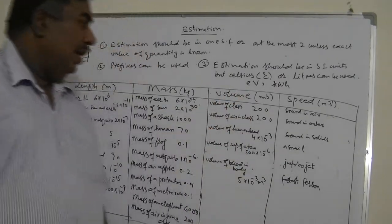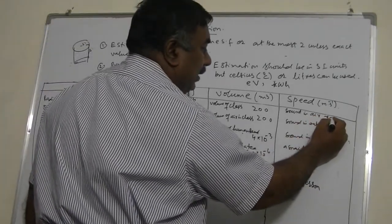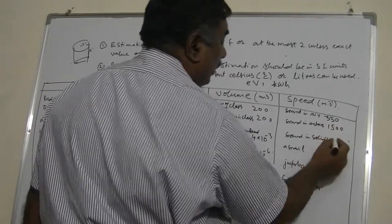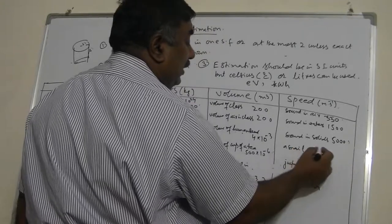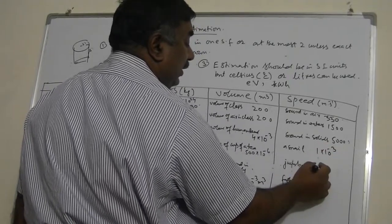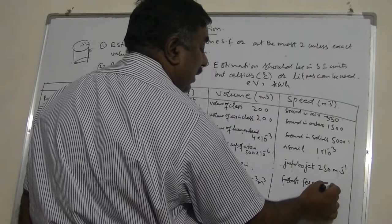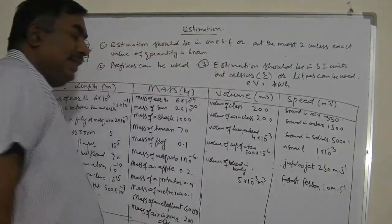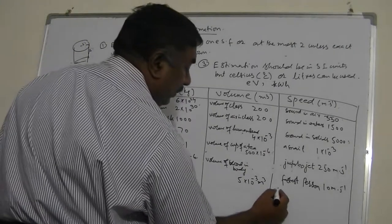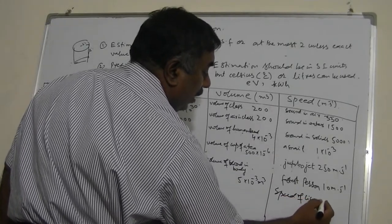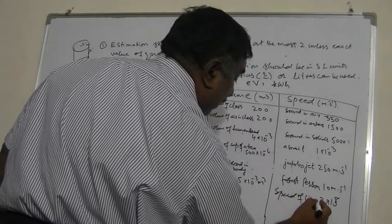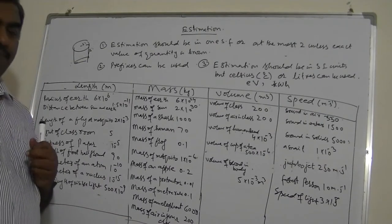For speeds: the speed of sound in air is 330 m/s, in water it is 1,500 m/s, and in solids it is about 5,000 m/s. A person's walking speed is about 1 mm/s, or 1 × 10⁻³ m/s. A jumbo jet travels at about 250 m/s. The fastest person runs at approximately 10 m/s. The speed of light is 3 × 10⁸ m/s, a universal constant.